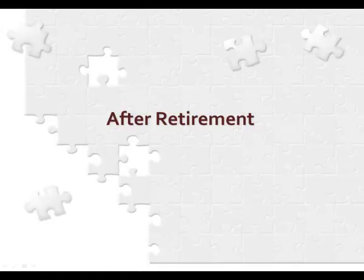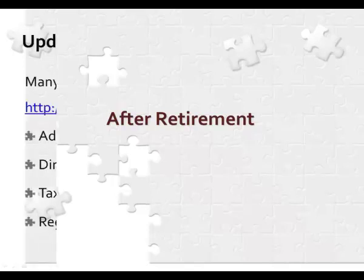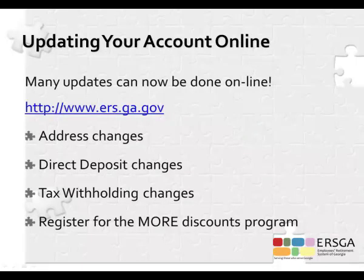Now that the application process is finished, here is some helpful post-retirement information. If you have not yet registered to access your account online, we highly recommend doing so at www.ers.ga.gov — this allows you to view monthly pay stubs and make changes such as updating your address, bank account, or tax withholding. As a state retiree, you may also register for the MORE discount program, which provides discounts on certain goods and services and can only be done online.